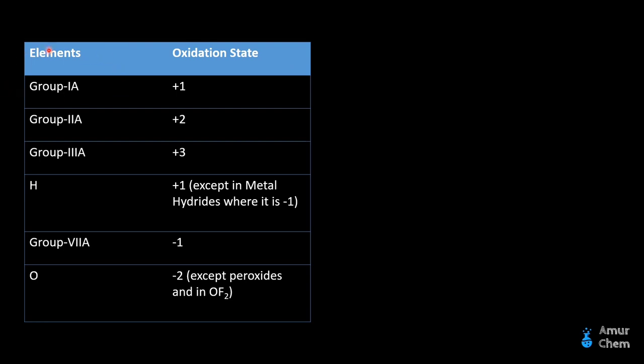Group 1A elements have an oxidation state of positive 1. For example, lithium and sodium. Both contain a single valence electron, so they will lose that valence electron, form a single positive cation, and acquire an oxidation state of positive 1.